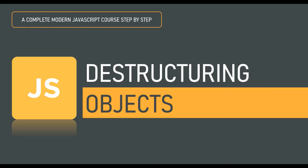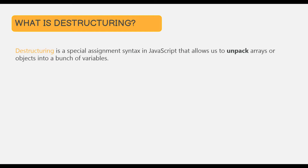In the last lecture, we learned about destructuring an array in JavaScript. Destructuring is a special syntax in JavaScript that allows us to unpack arrays or objects into a bunch of variables. We have already seen how to destructure an array in our previous lecture. In this lecture, we are going to talk about destructuring an object.